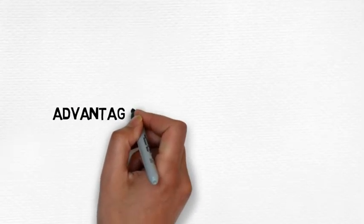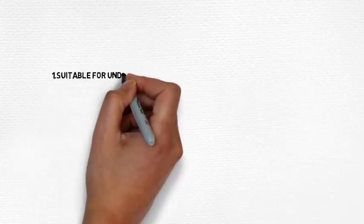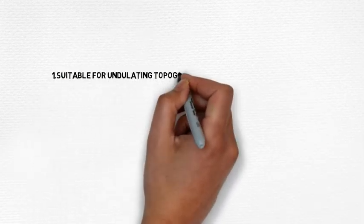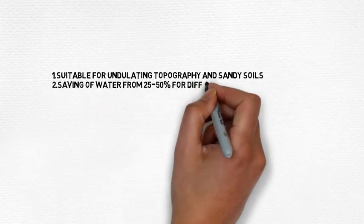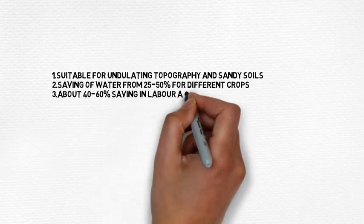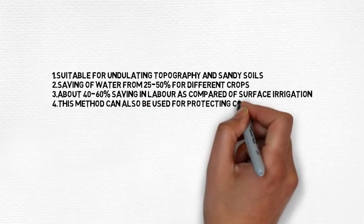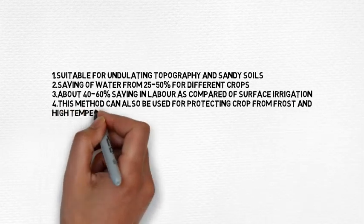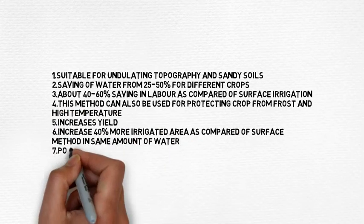Now we will learn about the advantages of sprinkler irrigation. It is suitable for undulating topography and sandy soils. There is a saving of water from 25 to 50% for different crops, and about 40 to 60% saving in labor as compared to surface irrigation. This method can also be used for protecting crops from frost and high temperature.